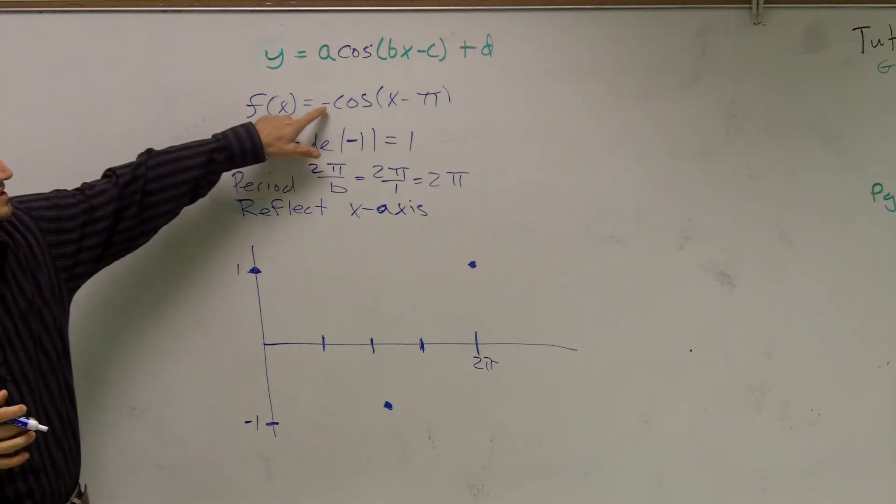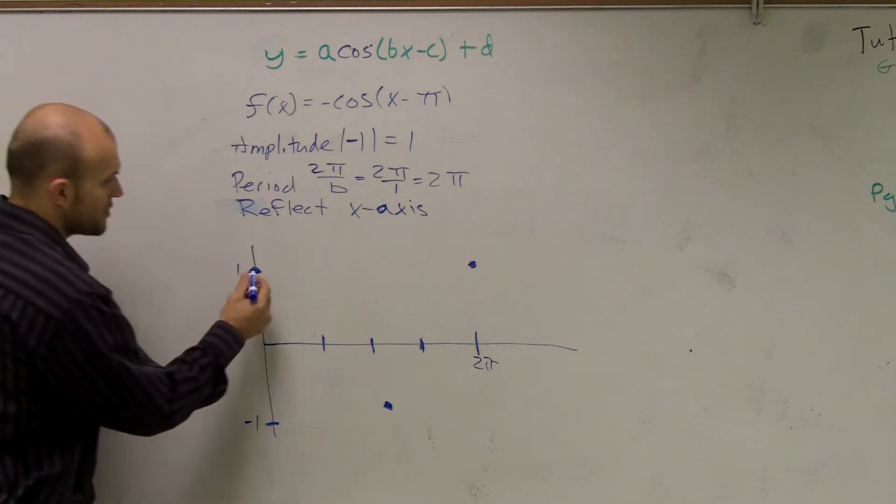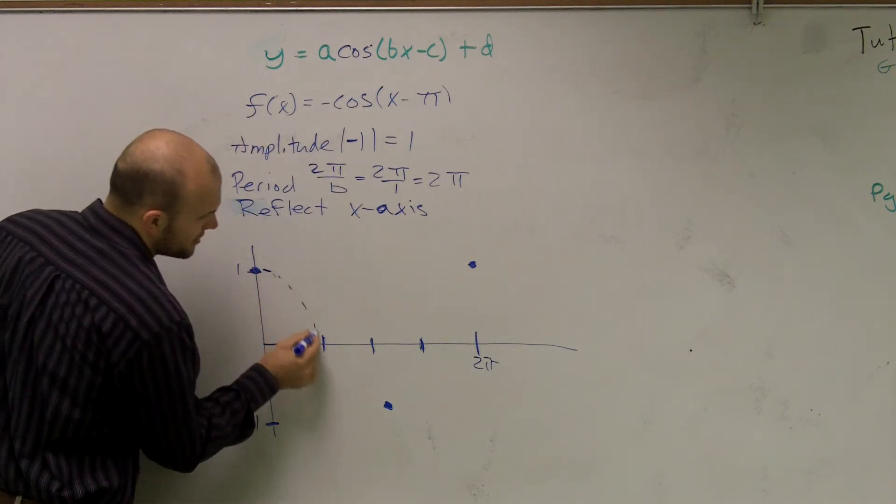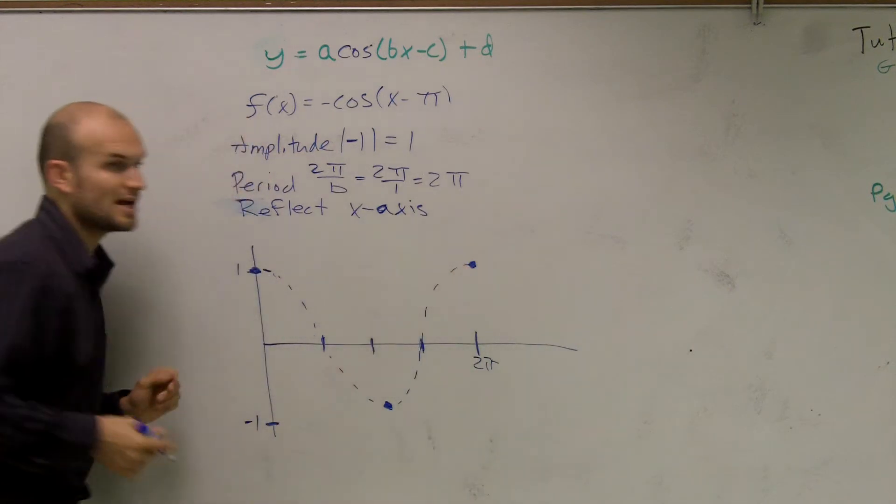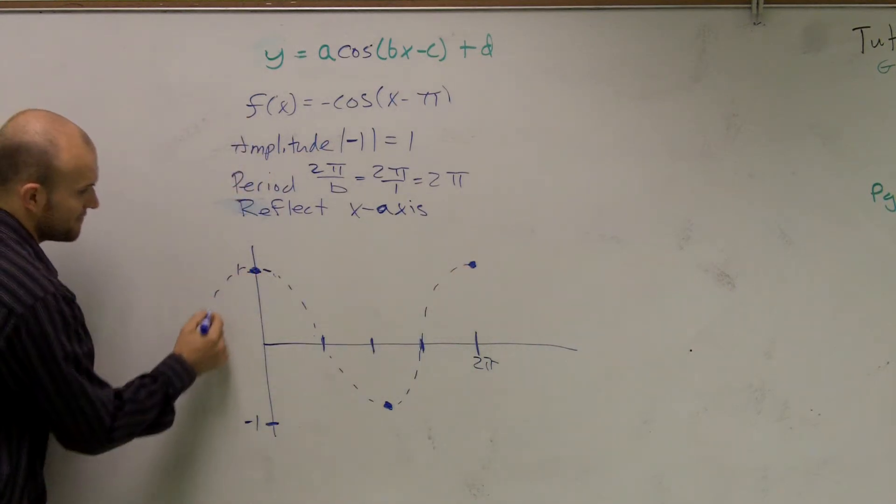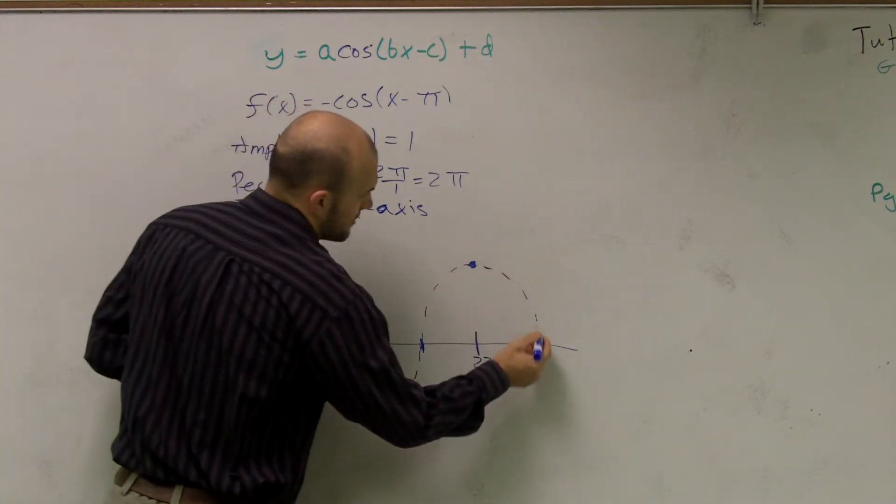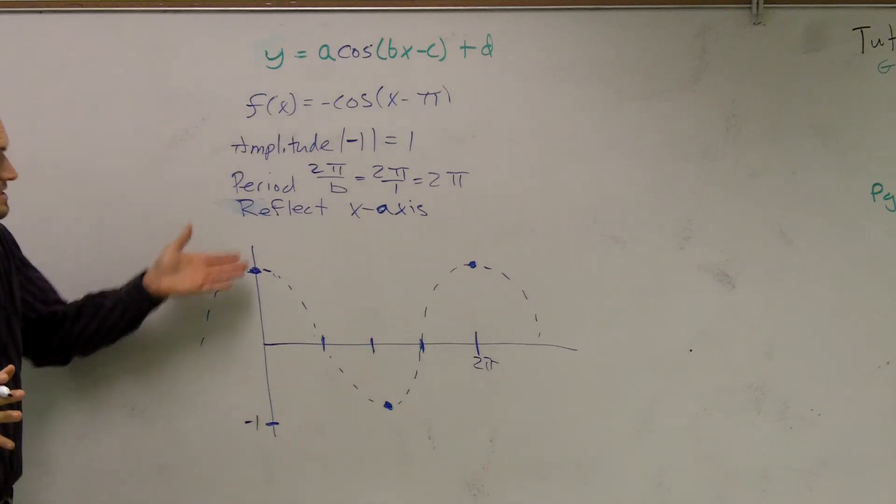But one thing we need to notice is this is a reflection. So instead of drawing, if you guys remember, a regular cosine graph would look like this as it goes infinitely and keeps on going, right?